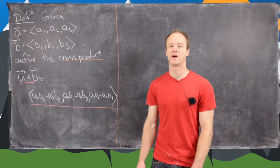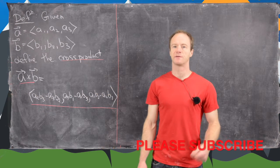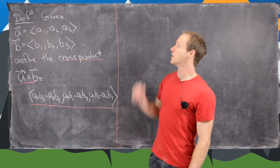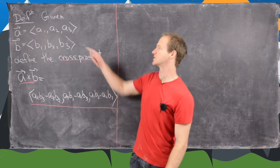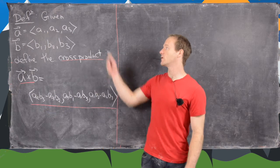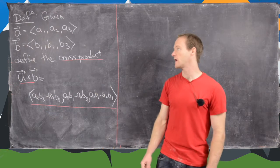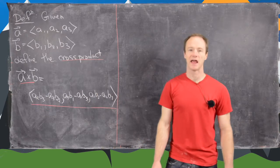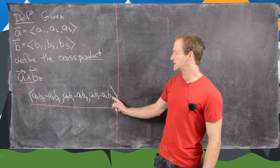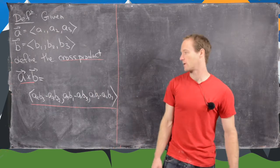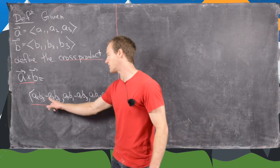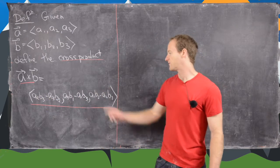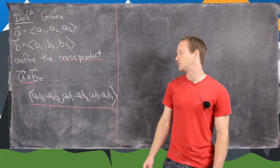In this video we want to define the cross product, look at one of its most important properties, and do some examples. If we're given two three-dimensional vectors a and b with components a1, a2, a3 and b1, b2, b3, the cross product a cross b is this new vector: a2 b3 minus a3 b2, a3 b1 minus a1 b3, and finally a1 b2 minus a2 b1.